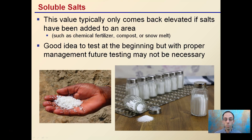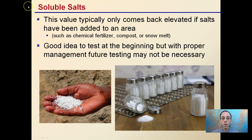Something else a soil report may include is something called soluble salts. This value typically only comes back elevated if salts have been added to the area, and salts can include chemical fertilizer, compost, or even areas where snow melt may be applied in winter months. It's a good idea to test at the beginning, and with proper management, future testing for this may not be necessary — meaning you don't always have to include this with every test. But when you're starting with an area, it's a good one to include.